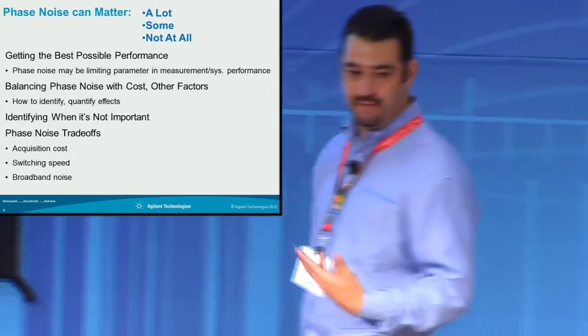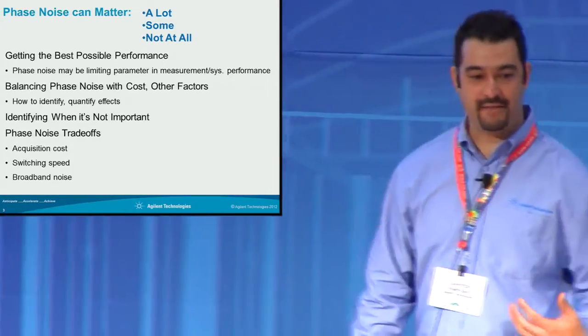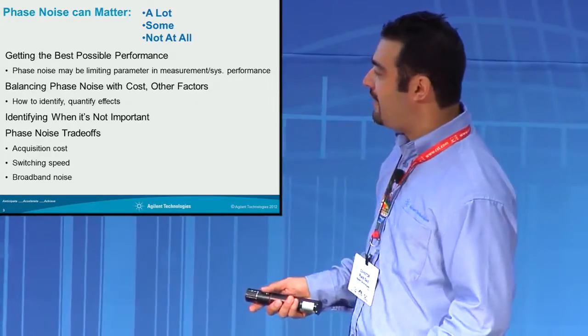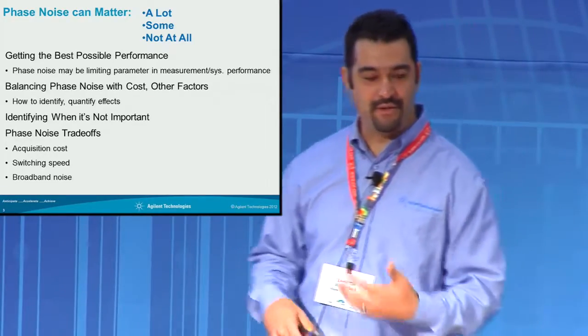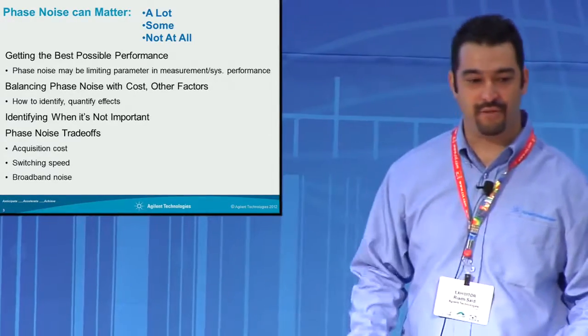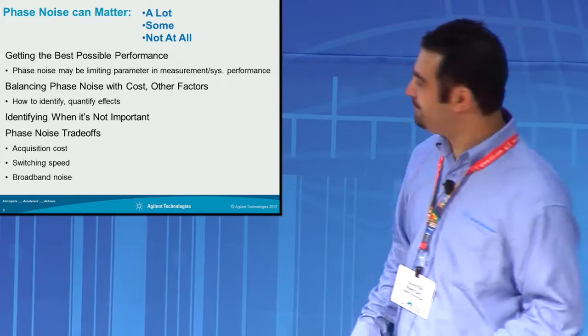Maybe you need switching speed for production throughput testing — that could be a factor in the signal source. And there are other things such as broadband noise which also have an impact on your choice of signal generation or technique.